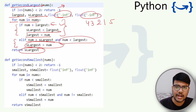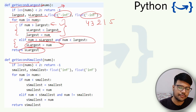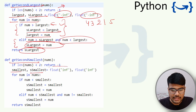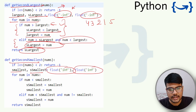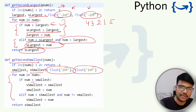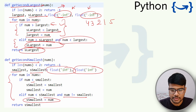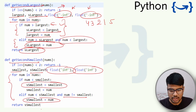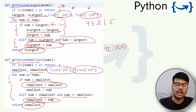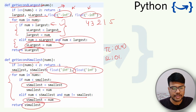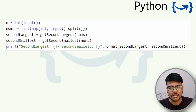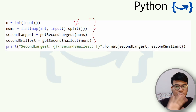For second smallest and second largest together, the logic is symmetric. Initialize smallest and second_smallest with a large positive integer (opposite of what we used before). The for loop uses less-than comparisons instead of greater-than: if num < smallest, store smallest into second_smallest then update smallest; else if num < second_smallest and num != smallest, update second_smallest. Return both second_smallest and second_largest. Time complexity is O(n), space complexity is O(1).